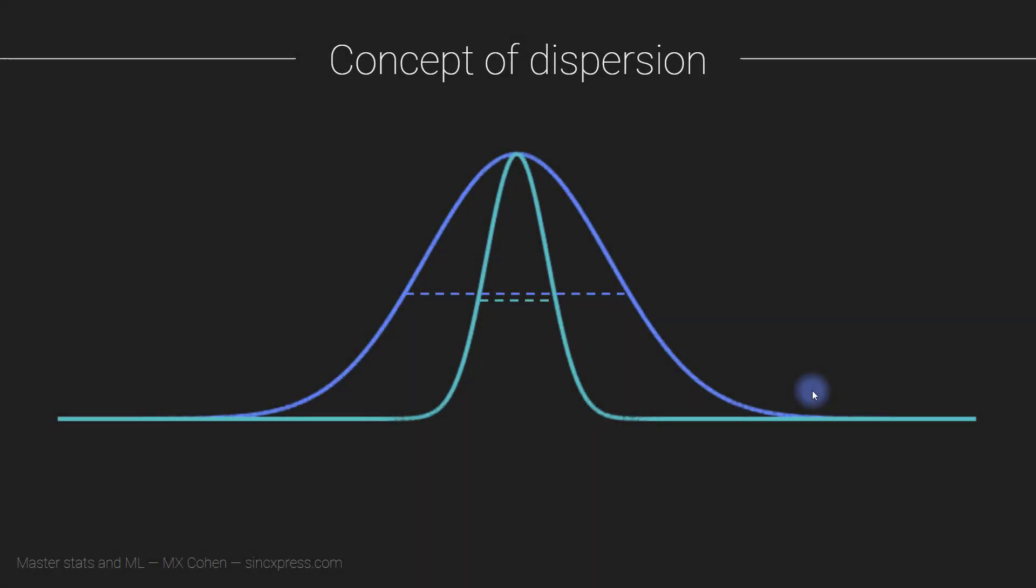In the previous video, you learned about measures of central tendency, so the kind of peak or the center of these distributions. Now, these two distributions, these two histograms, the blue line and the green line, they obviously have the same peak, they have the same mean, the same median and the same mode, but they are obviously very different distributions.